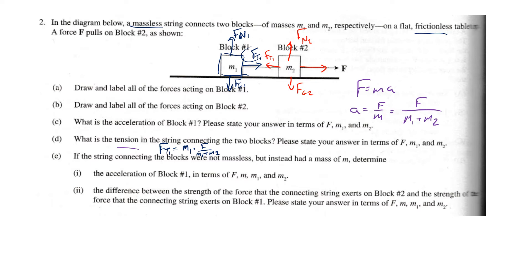If the string connecting the blocks is not massless but instead has a mass of m, determine the acceleration of block one. It works just like before — acceleration equals force divided by total mass. The total mass is now m1 plus m plus m2, because you're moving the entire mass including the string.